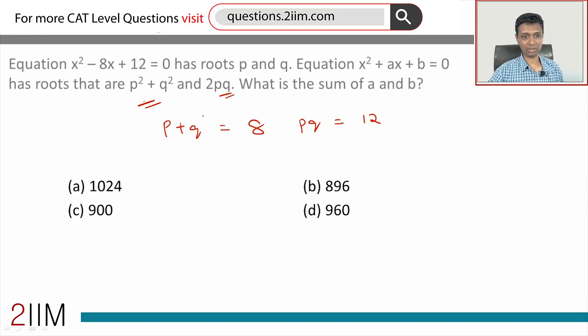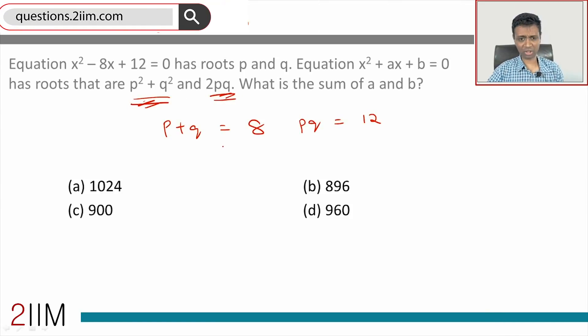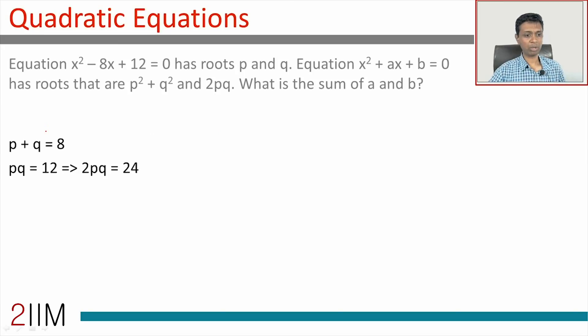So p + q is 8, pq is 12. If you find p² + q² and 2pq, we're through. I'm just going to capture this digitally and work from there. p + q is 8, pq is 12, so 2pq is 24. That much is obvious.